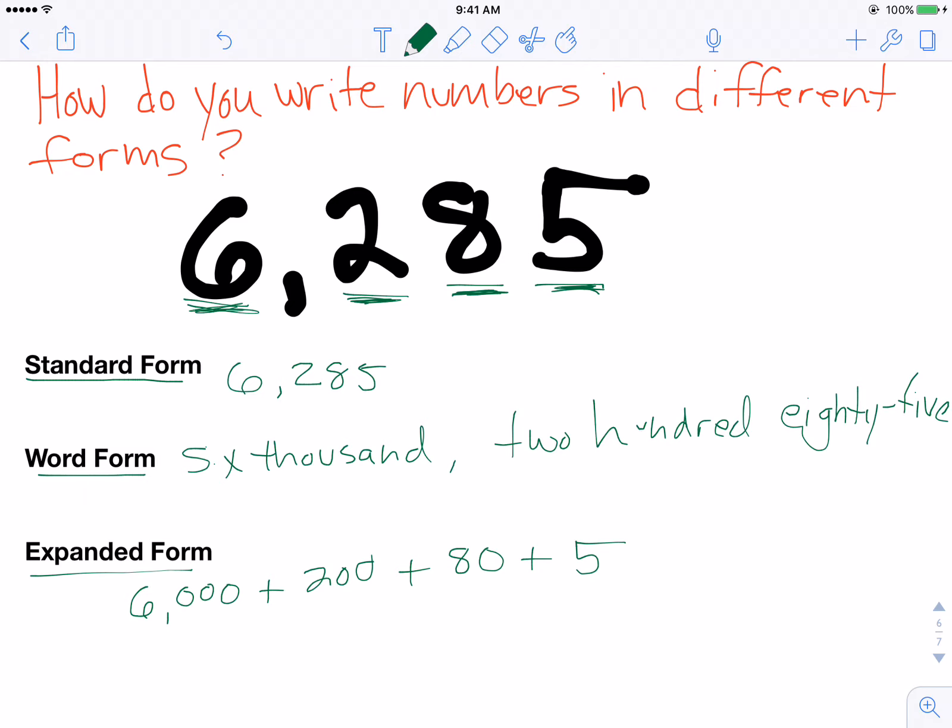Another way that expanded form might be written is kind of a combination between expanded and word form. So that would look like this. We have 6 thousands. So it would be 6 thousands. And there are two hundreds. So we would say plus two hundreds.